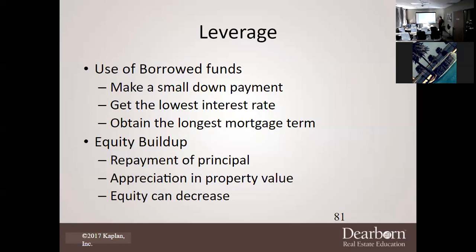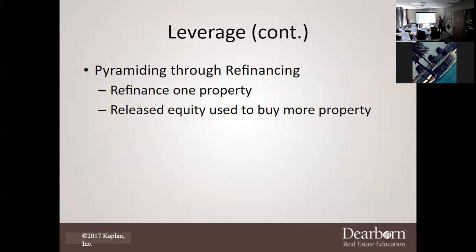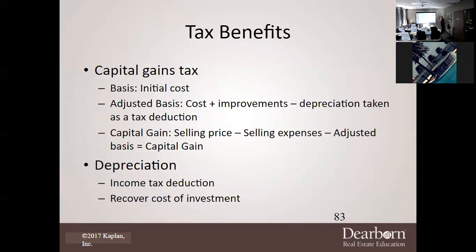Equity build-up is basically the repayment of the principal and appreciation of value. In some situations you can also have equity decrease. Pyramiding is what I was describing earlier — you refinance one property to release equity used to buy more property. There are also tax benefits, most notably the capital gains tax, which a lot of people don't fully understand.